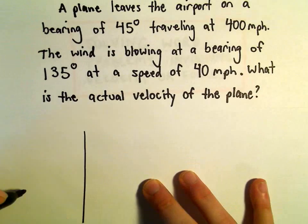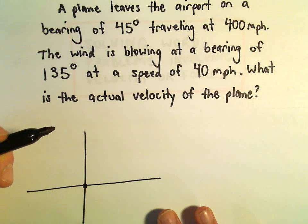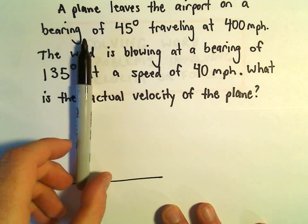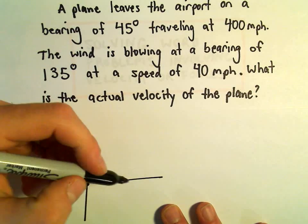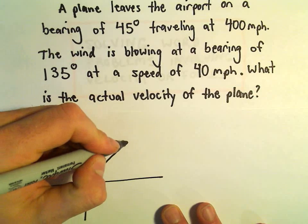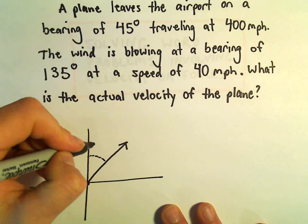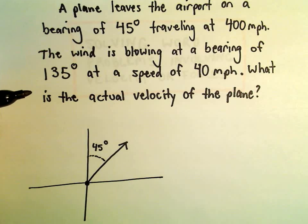We'll put the airport here at the origin. It's traveling at a bearing of 45 degrees — so 0 degrees and our bearing of 45 degrees — so it's traveling just northeast. The bearing tells us that this is 45 degrees, and again, the magnitude is 400 miles per hour.